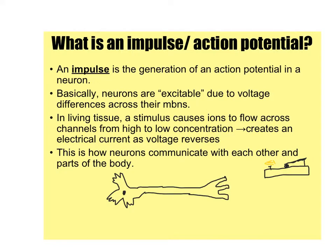Hello everybody and welcome back to another exciting edition of Ed Puzzle Lecture Notes. Today we're going to try to explain a pretty difficult concept: the nerve impulse, or what's otherwise called an action potential. This is how neurons talk to each other and how neurons talk to your muscles and glands.